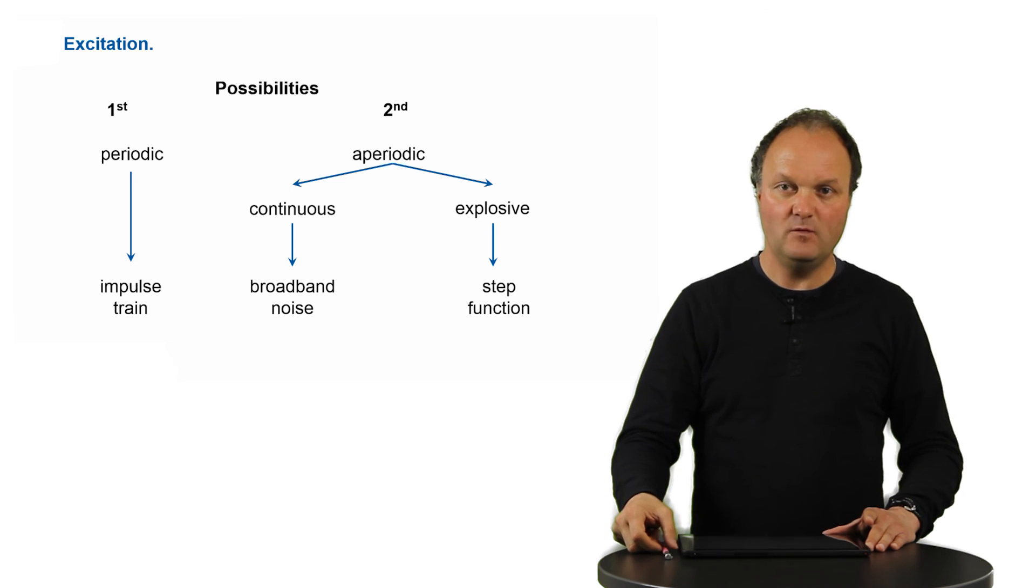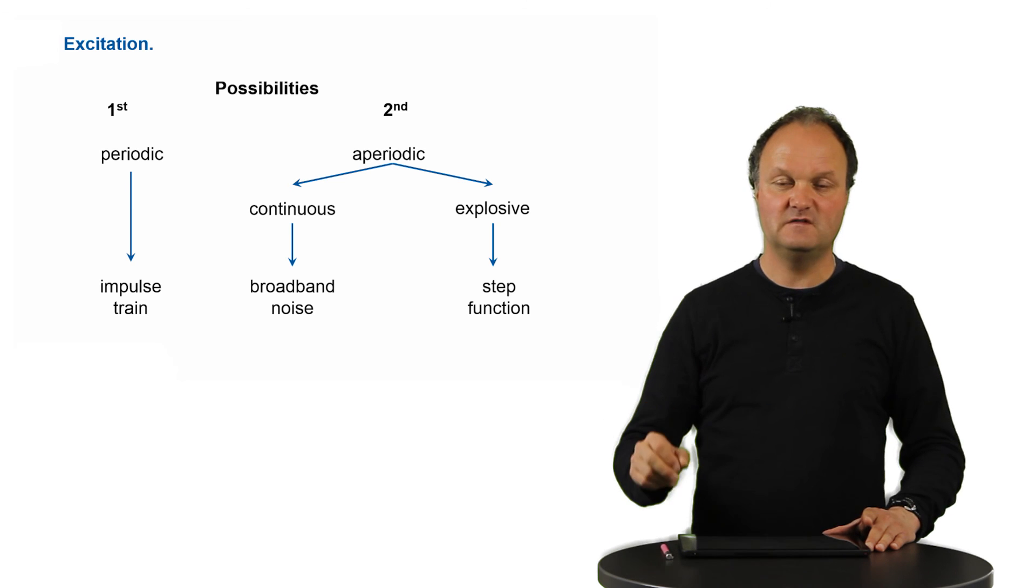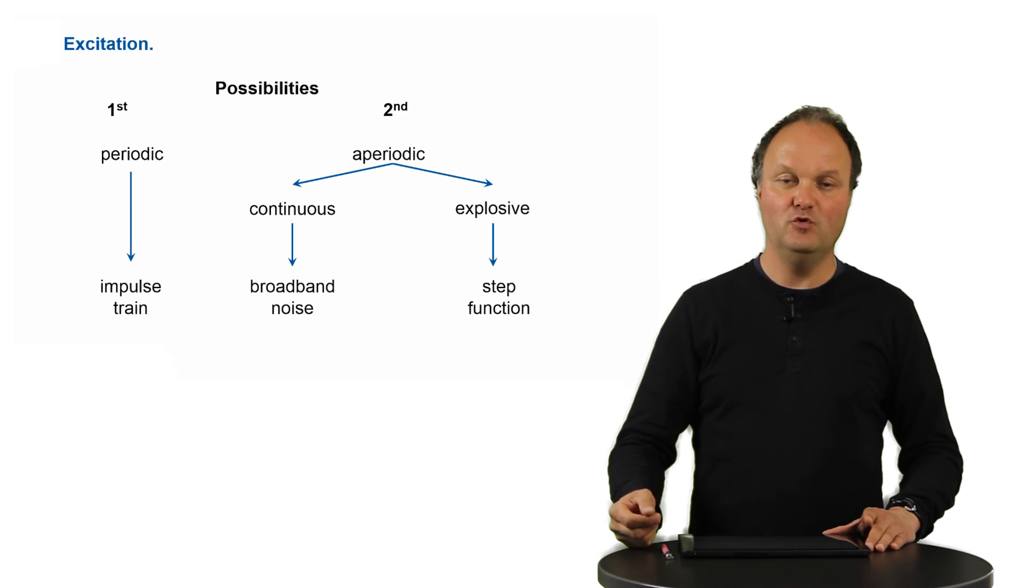So in summary, we have two different possibilities for the excitation signal, either a periodic impulse-train-like signal or a non-periodic signal, either a continuous one, which corresponds to a broadband noise, or an explosive one, which corresponds to a step function. All these excitation signals have many frequencies, which then can be shaped in order to put information onto this carrier signal. And this is done in the second step, namely the vocal shaping.